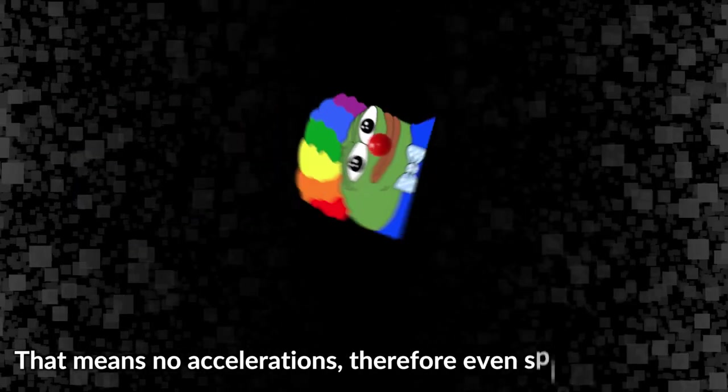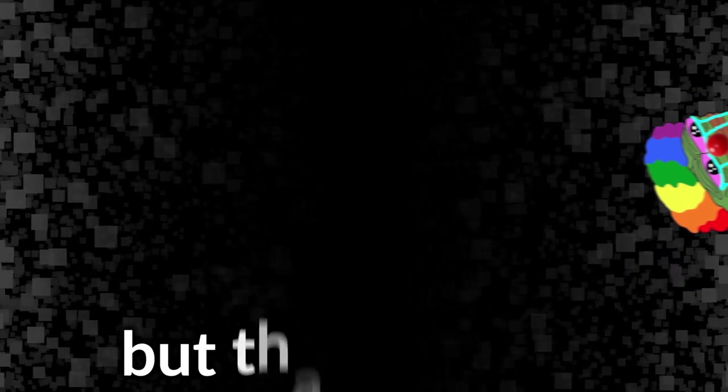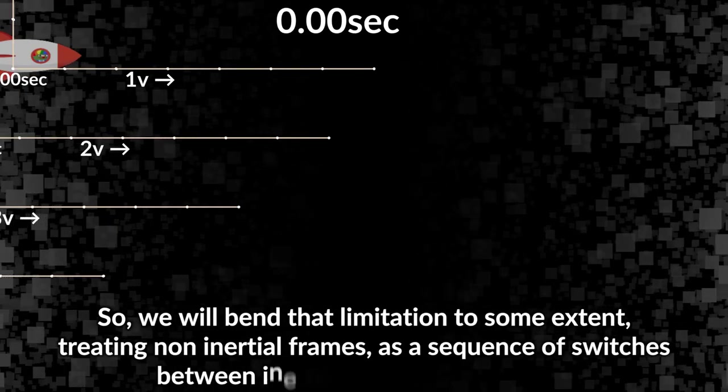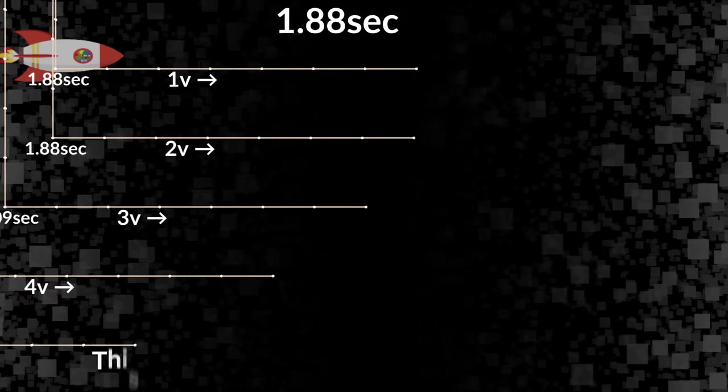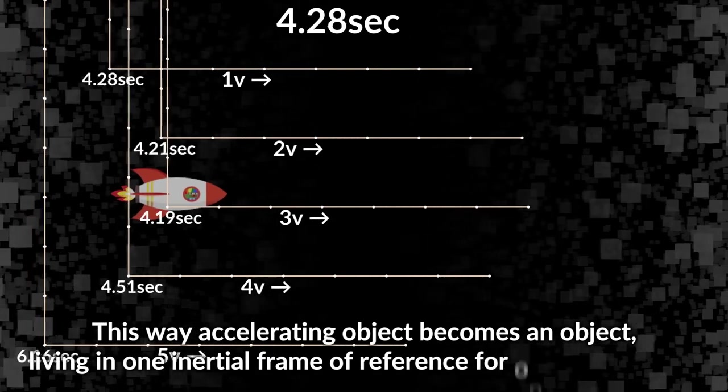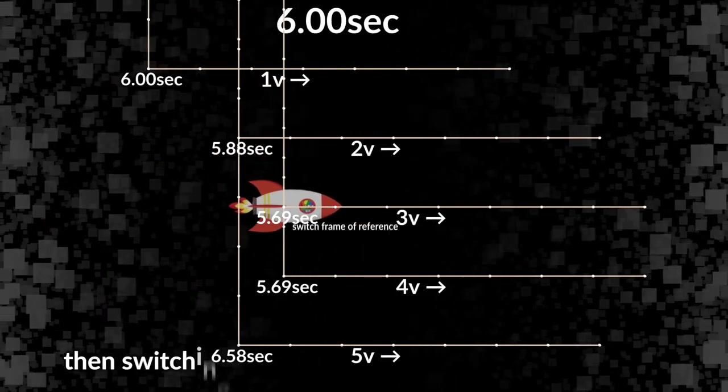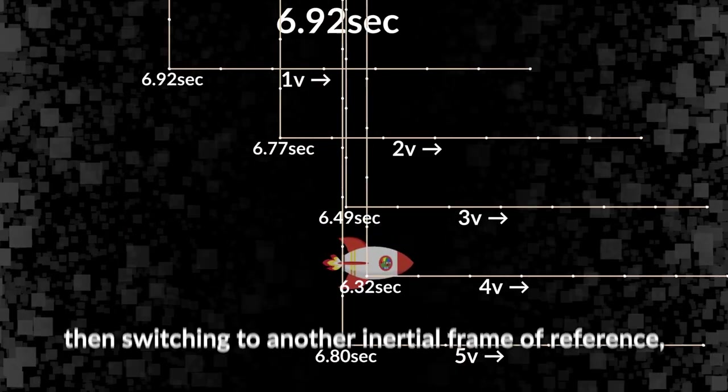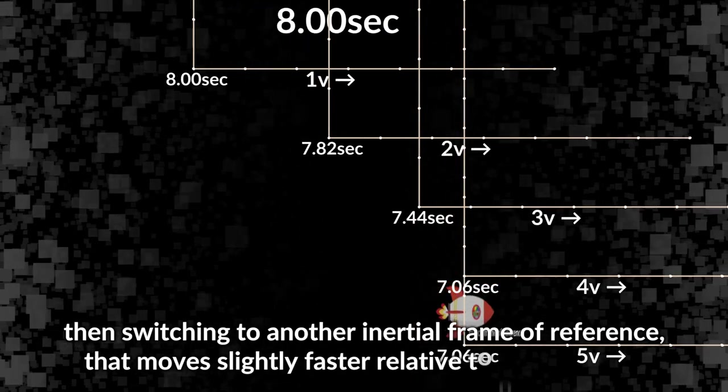Remember that special relativity only applies to inertial frames of reference - that means no accelerations, therefore even spinning is illegal. But that is boring, so we will bend that limitation to some extent, treating non-inertial frames as a sequence of switches between inertial frames of reference.